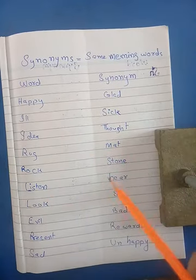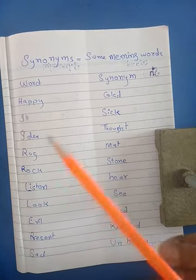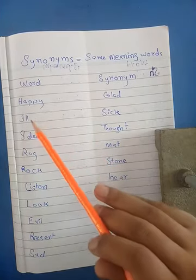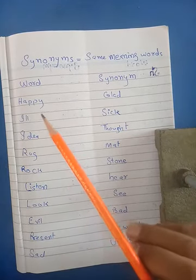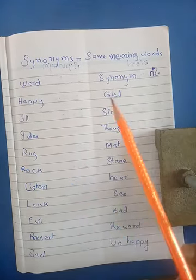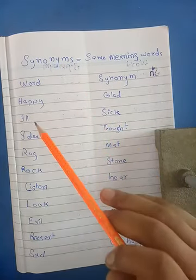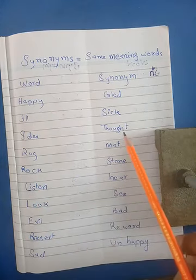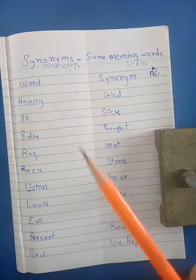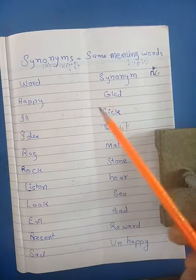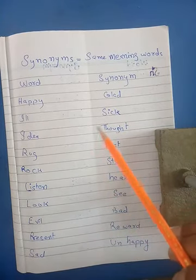Here is the list of words. We have to read and memorize the list. There is the word happy — the synonym of happy is glad. The meaning of happy and glad are the same. Happy کا مطلب ہوتا ہے خوش اور glad کا مطلب بھی ہوتا ہے خوش، تو یہ دونوں synonyms ہو گئے، ان دونوں کی meaning same ہو گئی۔